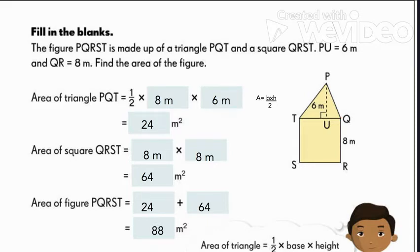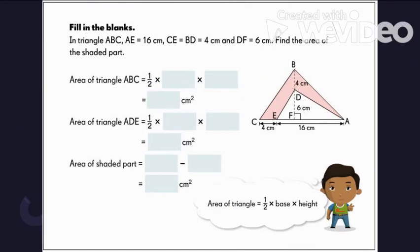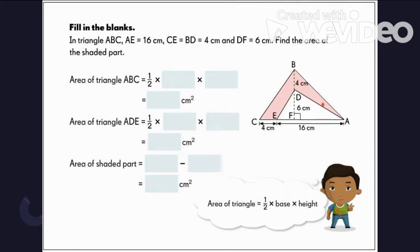Let's have another example. Here we have triangle ABC, where AE is equal to 16 cm, CE is equal to 4 cm, and DF is equal to 6 cm. So find the area of the shaded part — the pink region. The first step is to identify the shapes that make up the figure. Here we have two triangles that differ in size. Let's get first the area of the big triangle so that we can subtract the area of the smaller triangle from it to get the area of the shaded portion.